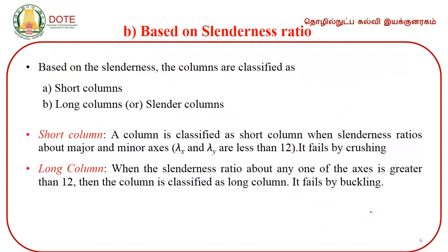Short columns are defined as those where the slenderness ratio — the ratio between the effective length and the least lateral dimension — is less than 12. If the slenderness ratio is less than 12, the column is classified as a short column. A short column fails by crushing.